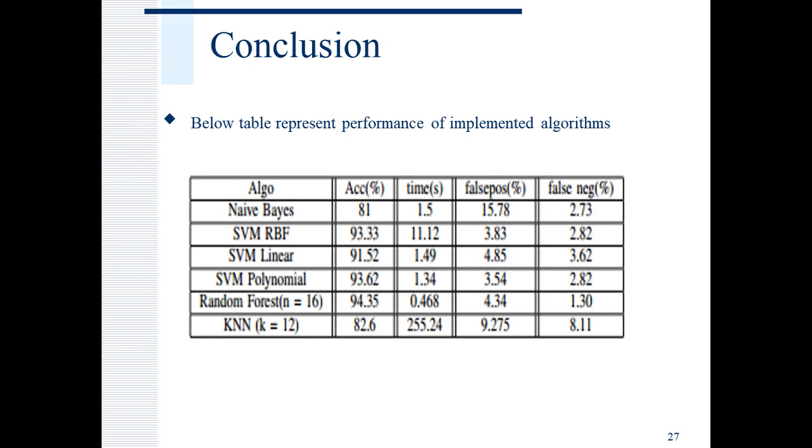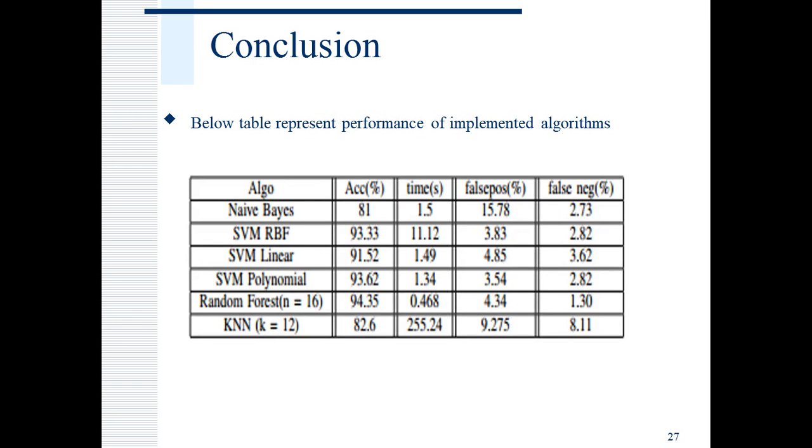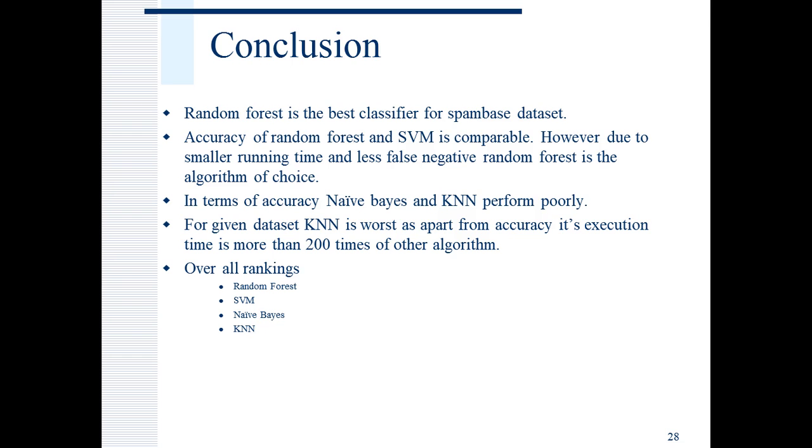In terms of accuracy, Naive Bayes and KNN perform poorly. For given dataset, KNN is the worst algorithm because it takes execution time that is 200 times the other algorithms. So, based on the given dataset, the overall ranking would be random forest, SVM, then Naive Bayes and then KNN. The overall ranking here is just for the spam base dataset. Results may vary on different data.